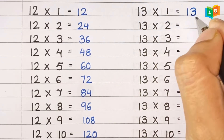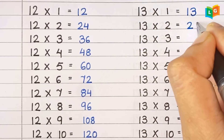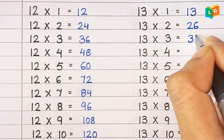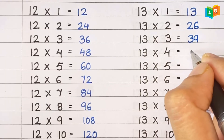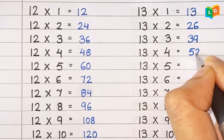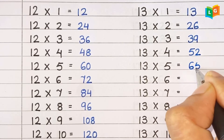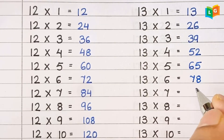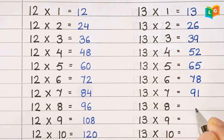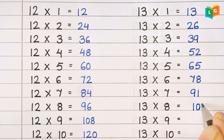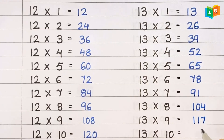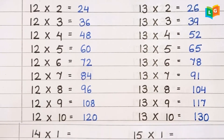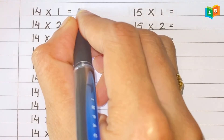Now let's see table of 13. 13 1s are 13, 13 2s are 26, 13 3s are 39, 13 4s are 52, 13 5s are 65, 13 6s are 78, 13 7s are 91, 13 8s are 104, 13 9s are 117 and 13 10s are 130.